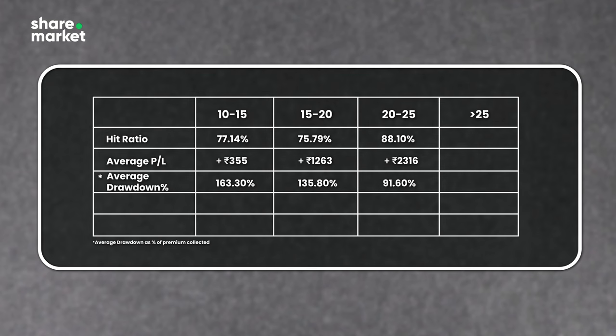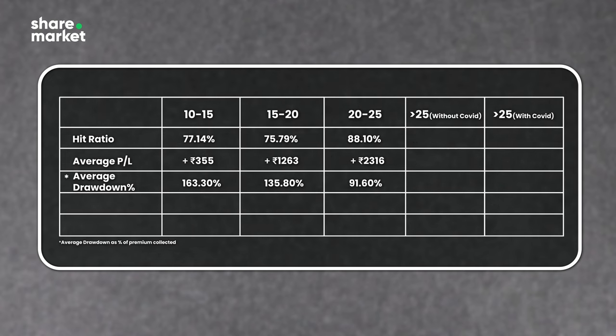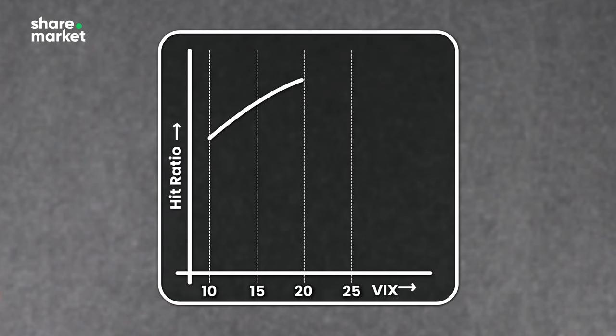We also looked at the period when VIX is greater than 25, splitting between COVID and non-COVID periods. During COVID, VIX went up to 30-35 and up to 80%. In a non-COVID period, when the hit ratio was 88% at the 20-25 range, it fell to 73% at greater than 25. This means the increase in hit ratio is not linear — it's actually a U-shape. From 10-15 up to 20-25 the hit ratio increases, but above 25 it falls.